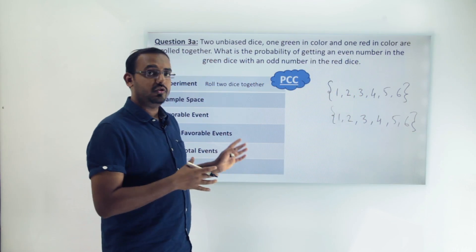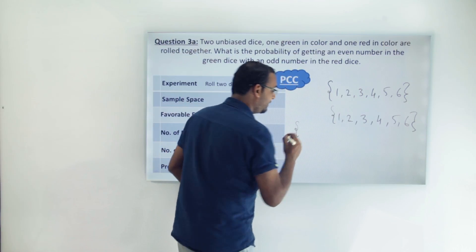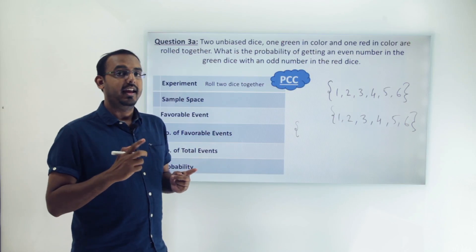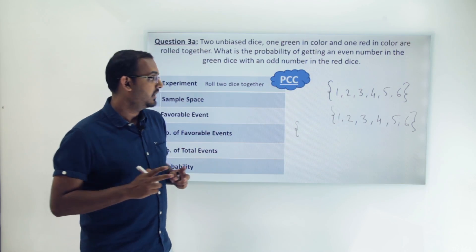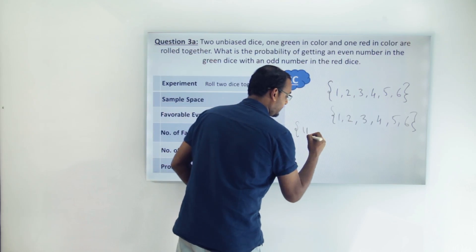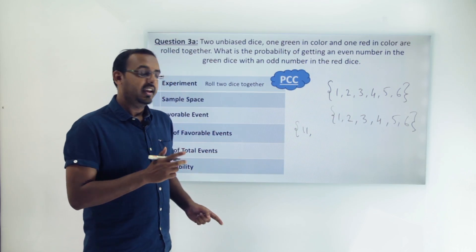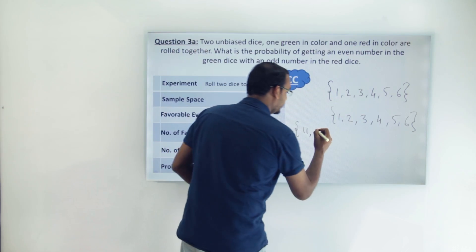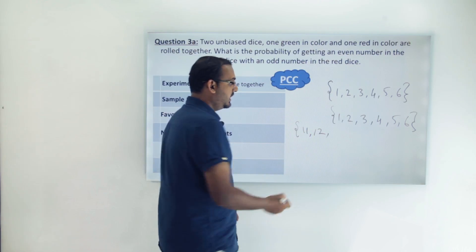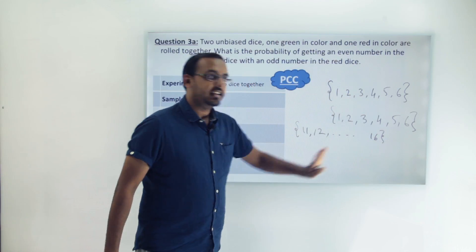Since we are rolling two dice together, the combined sample space is going to be a little different. It will resemble ordered pairs. For example, I can get 1 on the first die and 1 on the second die — that is one outcome. Or I can get 1 on the first die and 2 on the second die — that is also an outcome.